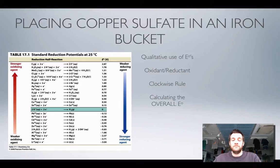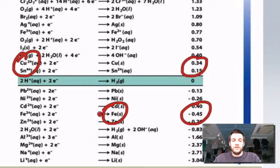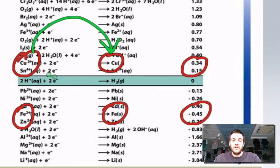Placing copper sulfate in an iron bucket. We've got copper ions and iron metal. The iron reduction potential is more negative than the copper one. Therefore this equilibrium moves to the left and the copper equilibrium moves to the right, so copper ions will form copper and iron will turn into iron ions. Oxidant-reductant: copper ions are a stronger oxidizing agent than iron ions, so copper ions will oxidize iron. Or: iron is a stronger reducing agent than copper, so iron will reduce copper ions. Clockwise rule confirms the reaction is feasible.